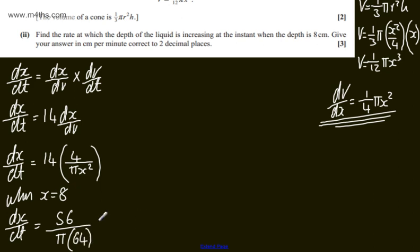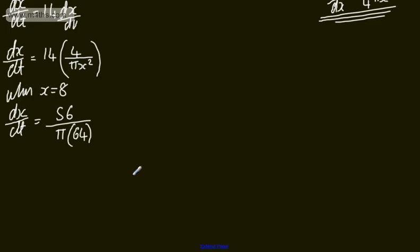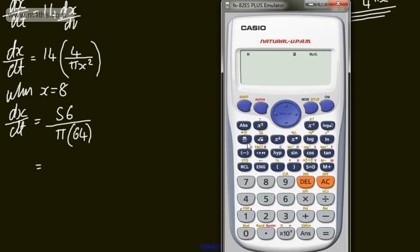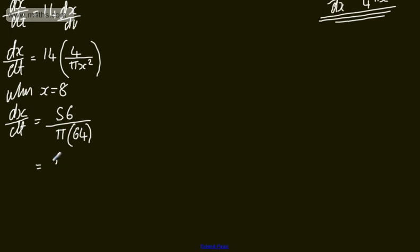We can, of course, cancel this if we like. We need to give our answer to two decimal places. So straight through the calculator, we could have 56 over 64, and then we'll have pi. So that's going to give me now 0.2785. So let's write this in, 0.2785 dot dot dot, and this is centimeters per minute.